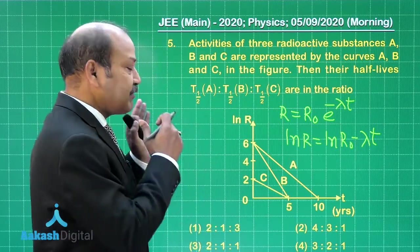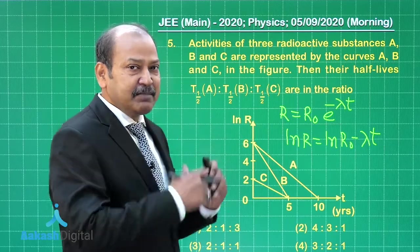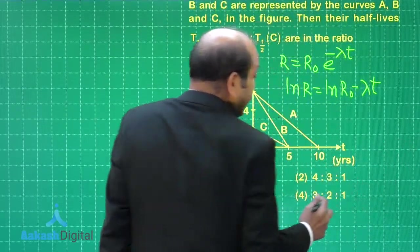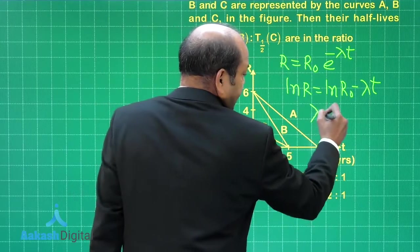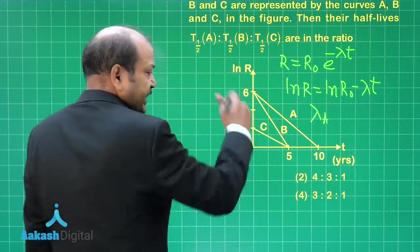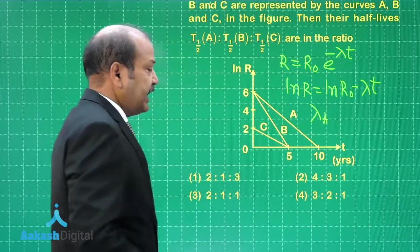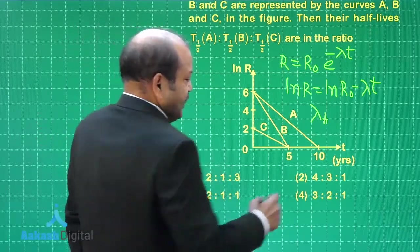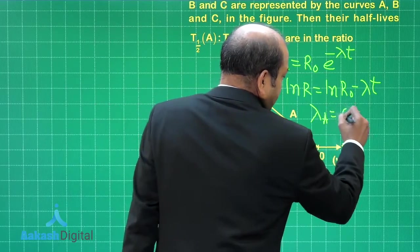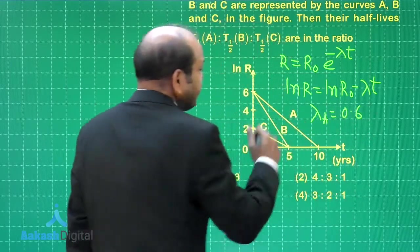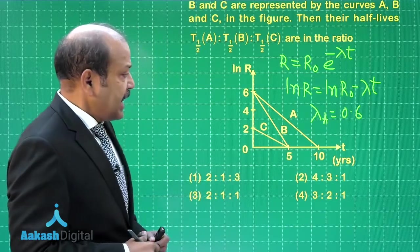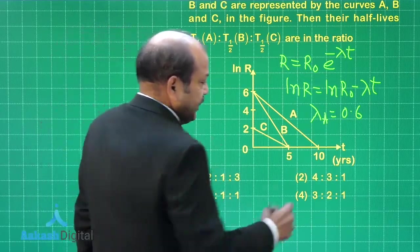We have the values of lambda A, lambda B, and lambda C. For example, the value of lambda A is equal to the negative of the slope of the curve for A, and that is equal to 0.6. So this is coming out as 0.6, the unit here would be per year.